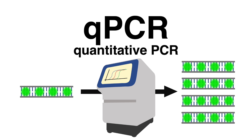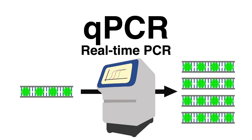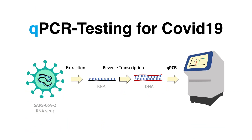QPCR, quantitative PCR or real-time PCR, is an effective technique to quantitatively determine the presence of a target sequence or gene in a sample. Up to date, QPCR is the gold standard method to test patients for viral infections such as COVID-19.